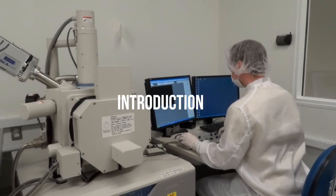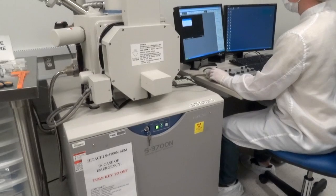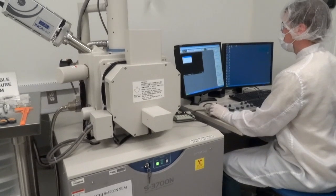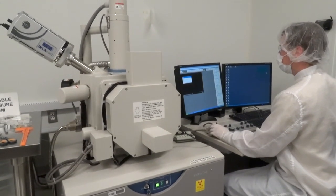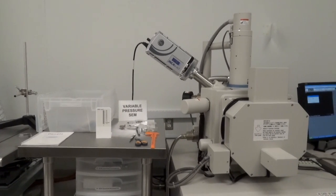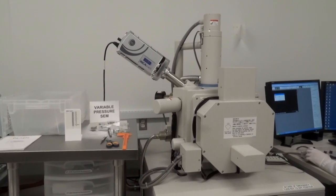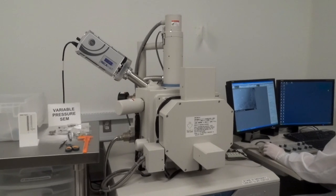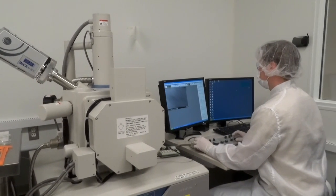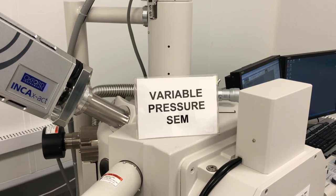The Hitachi S3700N Variable Pressure SEM features a low vacuum observation of 6 to 270 pascals, which enables imaging of non-conductive samples such as dielectrics and wet samples such as cultured cells without traditional sample preparation. A deep and cool stage controls sample temperature between negative 10 degrees Fahrenheit and 120 degrees Fahrenheit to control sample vapor pressure.